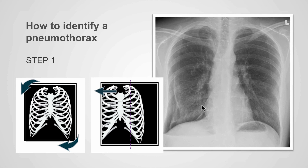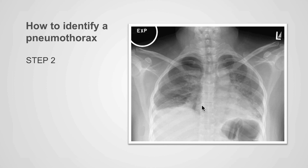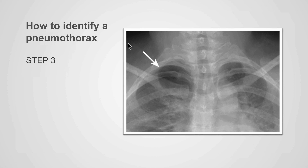So how do we identify a pneumothorax? The first step is to make sure that the patient is properly centered and is not rotated. Next we need to understand what kind of examination was performed — in this case, markers tell us this was an expiration film. Next we look for asymmetry in the apical regions, knowing that air within the pleural space will rise to the highest point. In this case, we can identify that the right apical region is blacker than on the left.